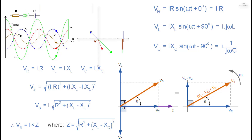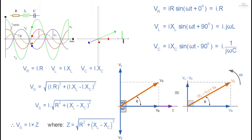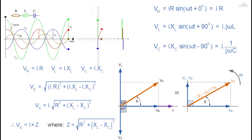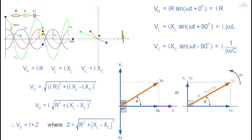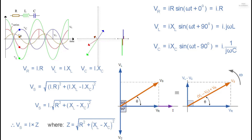The total impedance of the circuit can be thought of as the voltage source required to drive a current through it. Since the three vector voltages are out of phase with each other, XL, XC and R must also be out of phase, with the relationship between R, XL and XC being the vector sum of these three components, giving the RLC circuit's overall impedance Z. These circuit impedances can be drawn and represented by an impedance triangle.